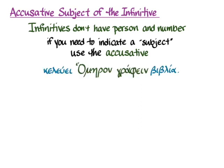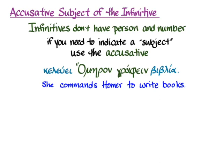We've seen this a little bit before; we just didn't think about that's what we were doing. 'Keleue Homeron graphene biblia' means 'she commands Homer to write the books.' When we learned keleue, we thought of Homer as the direct object of keleue, and he is — Homer is the person she's commanding, so he's in the accusative. But it also makes him the person doing the action of the infinitive; he becomes the subject of the infinitive. He's the one doing the writing.